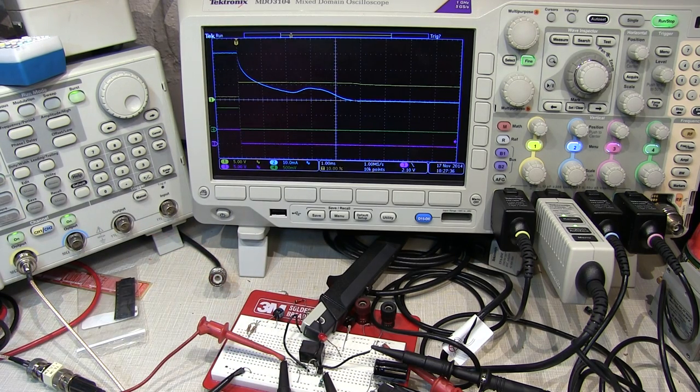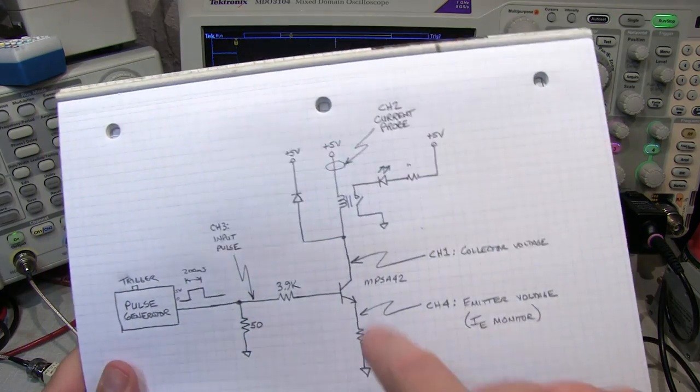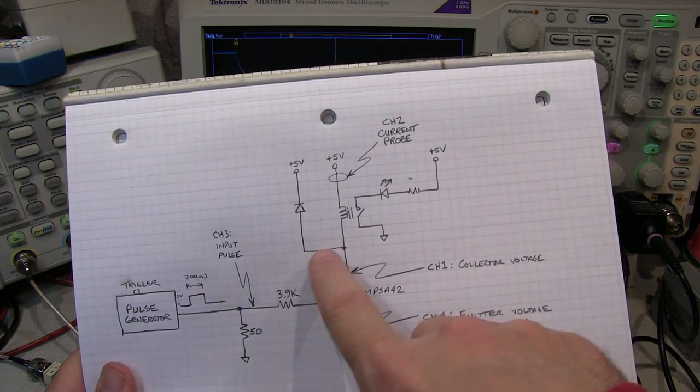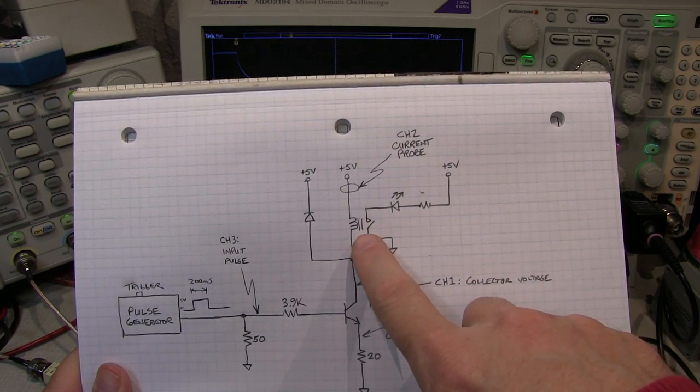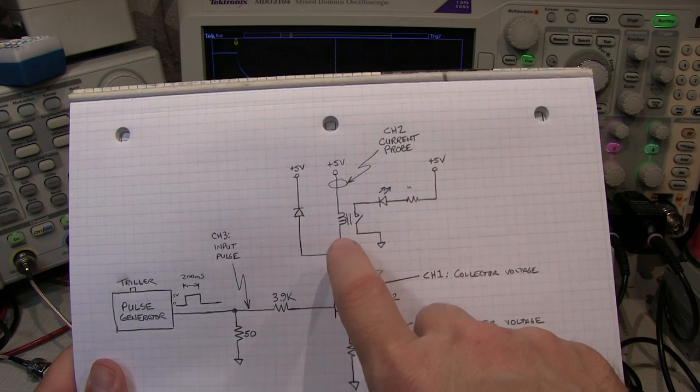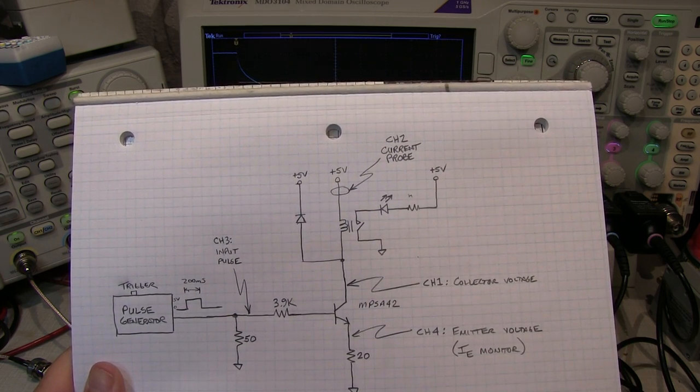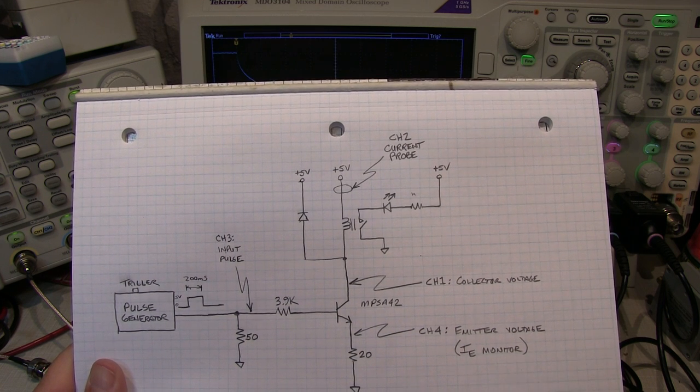So anyway, I hope you enjoyed the video. Learned a little bit about why we use these snubber or flyback diodes around inductive loads. Relay coils are one of them. Little permanent magnet motors and things like that are certainly other areas where that type of protection might be warranted. Thanks again for watching and comments are always welcome.